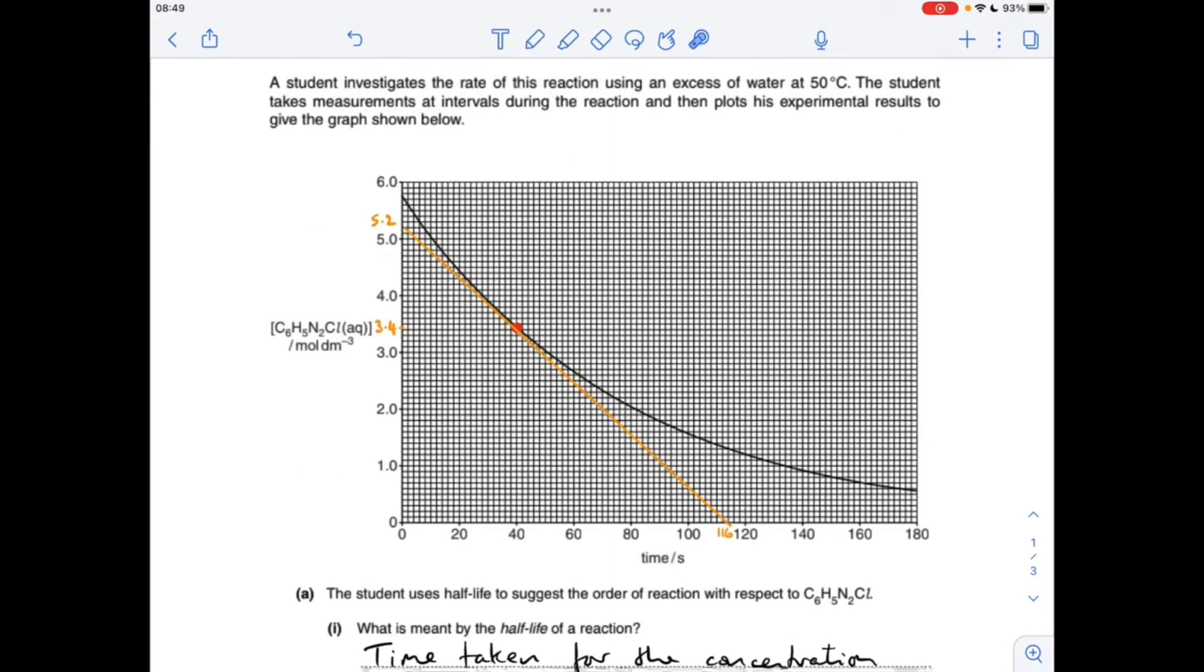So obviously to calculate the rate at 40 seconds we draw a tangent to the curve at 40 seconds. There's going to be some variation in these because some people's tangents are all a little bit different. So there would be a range allowed by the exam board.